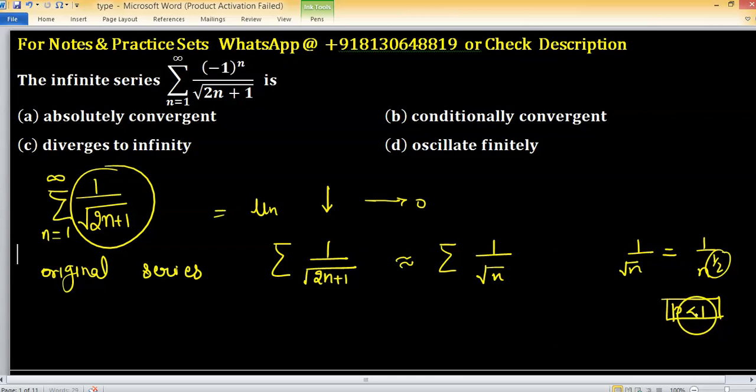The given series is convergent, but the absolute series is divergent. So, this series is conditionally convergent.